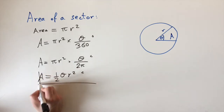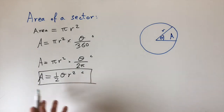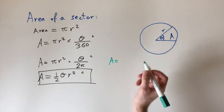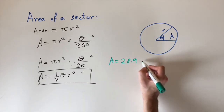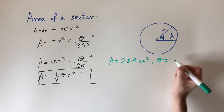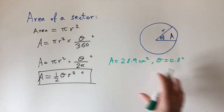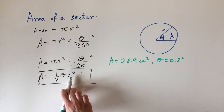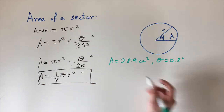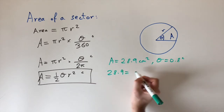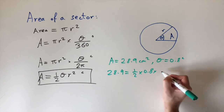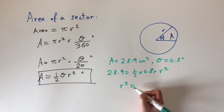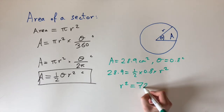Let's look at an example. Instead of just plugging in numbers, suppose we're given the area as 28.9 cm squared and the angle theta equals 0.8 radians, and we need to find the radius. Plugging into the formula: 28.9 = ½ × 0.8 × r squared. Rearranging gives r squared = 72.25.